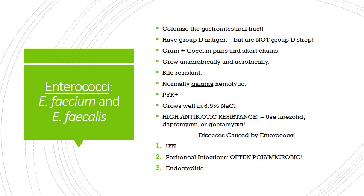Now let's talk about the enterococci — do not confuse these with the gram-negative enterobacteriaceae like E. coli. These are their own special organisms that colonize the gastrointestinal tract. They were previously classified as Group D strep according to the Lancefield groupings because they share the Group D streptococcal antigen, but were given their own genus in 1984. There are 54 species in this genus; we'll focus on only two: E. faecalis and E. faecium.